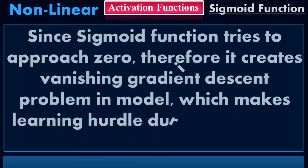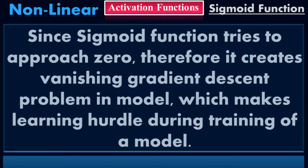Since the sigmoid function tries to approach zero, it creates a vanishing gradient descent problem in the model, which creates a learning hurdle during training. An activation function which tries to approach zero will create a vanishing gradient descent problem, which is not good for training. The model will not learn perfectly if this problem exists, so we have to avoid it as much as we can.